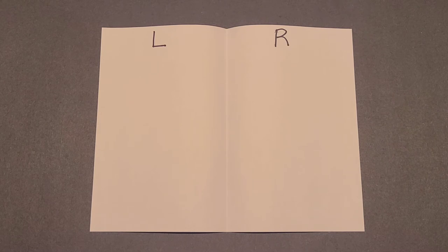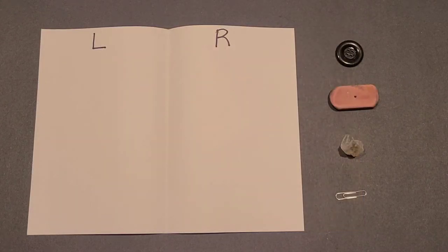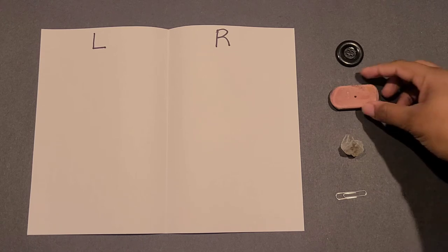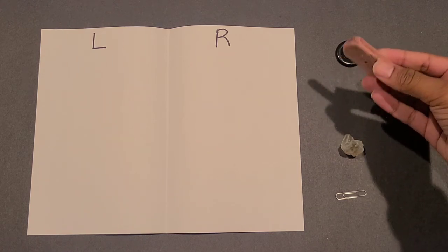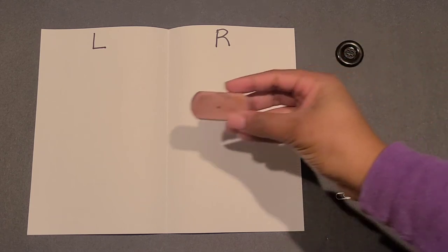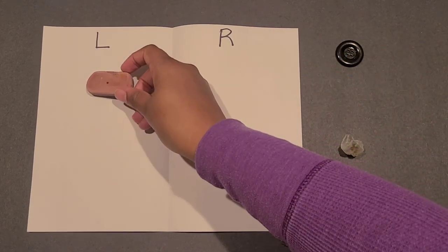Then, you can ask the child to place their small objects on the left or right side. For example, you can say, can you put the eraser on the left side of the paper? And the child can put the eraser on the left side.